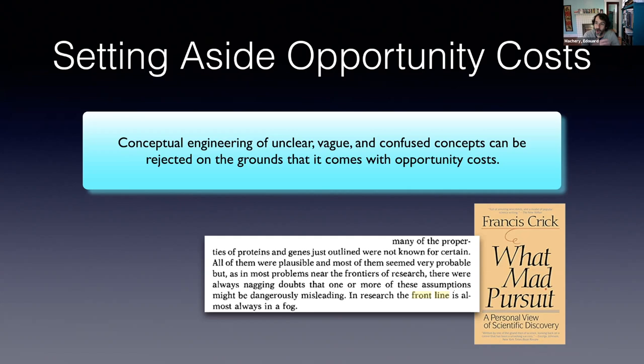Crick noticed that at the time the concept of gene was extremely unclear — there was a lot of uncertainty about the gene's properties. But it's very clear in that autobiography that he thought it would have been a mistake to try to clarify the concept of gene, and that the right thing was to get on with the very specific task of determining the molecular structure that allows gene duplication across generations. As he says insightfully: 'In research, the front line is almost always in a fog.'